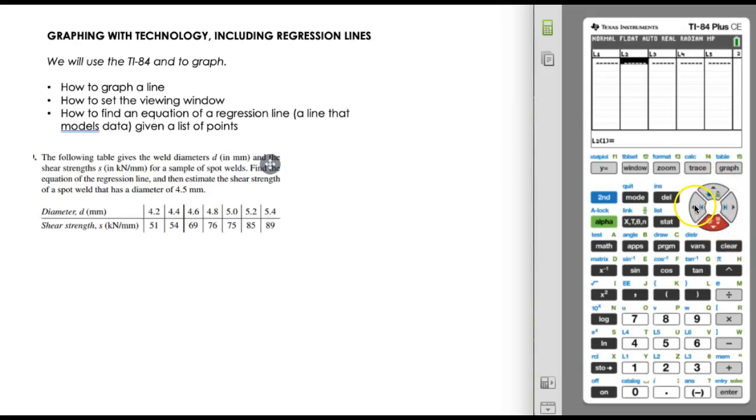So in list one, I'm going to put in these numbers: 4.2, and then enter, and it takes me to the next value, 4.4, 4.6, 4.8, 5.0, 5.2, and 5.4.